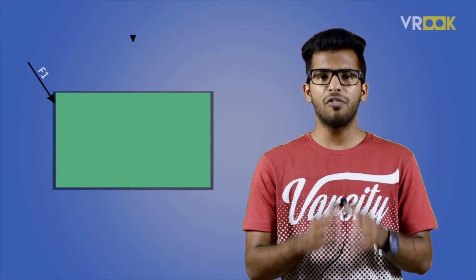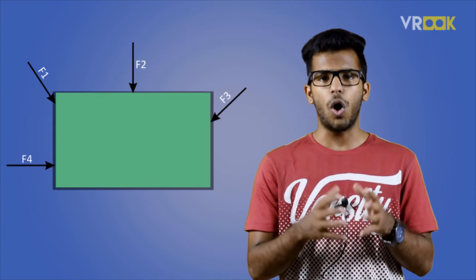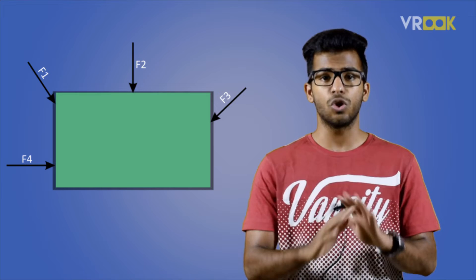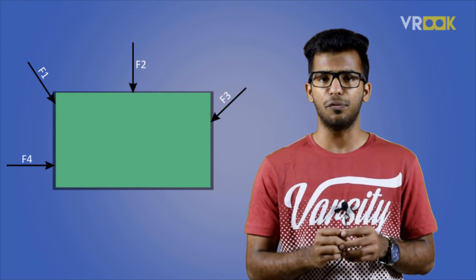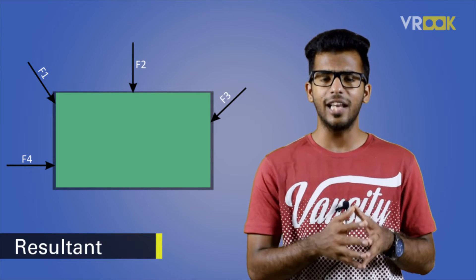Consider this body in a 2D plane — we have some forces acting on it. The objective is to find a single force which can replace all these forces. We call that single force the resultant. So how do we calculate this resultant, and where exactly will it act on the body?